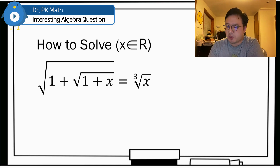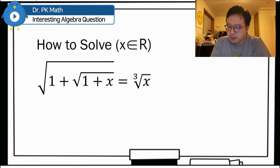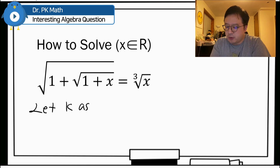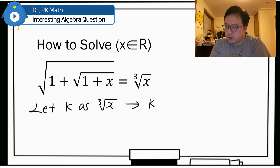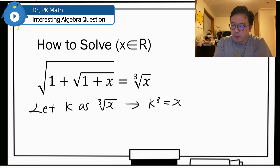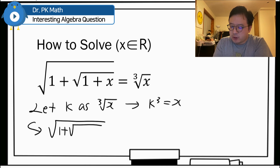For this question, I'll be letting the right-hand side — the cube root of x — as k. So let k equal the cube root of x. This tells us that k cubed is going to be equal to x. Using this, we can rewrite the equation as: square root of 1 plus square root of 1 plus k cubed, and this is now equal to k.